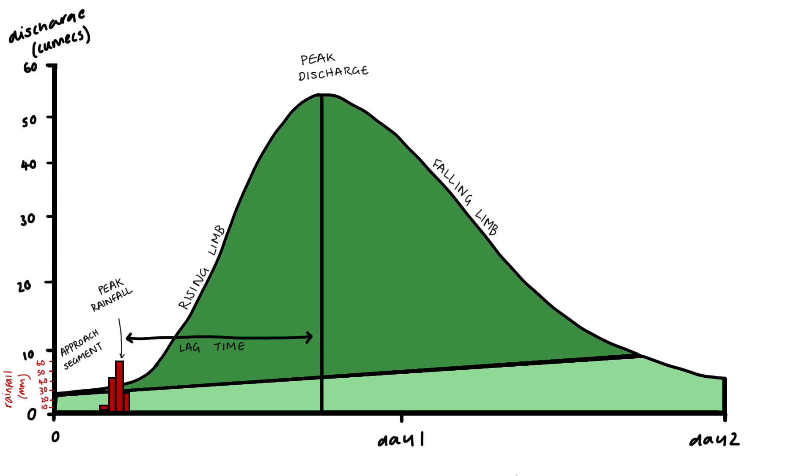After peak discharge there's a falling limb, with less water flowing into the river. At the bottom you can see base flow, which releases groundwater, maintaining the river's flow during periods of low precipitation. And above is the runoff or storm flow. At the point of bankfall discharge, water level has reached the top of its channel and so any further increase will lead to flooding.